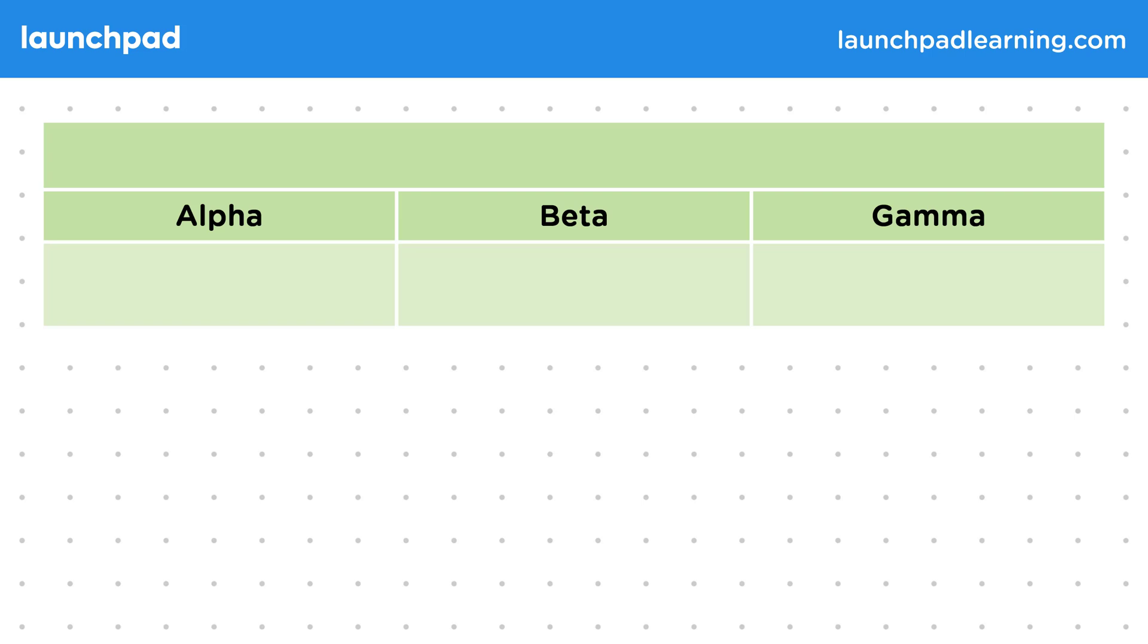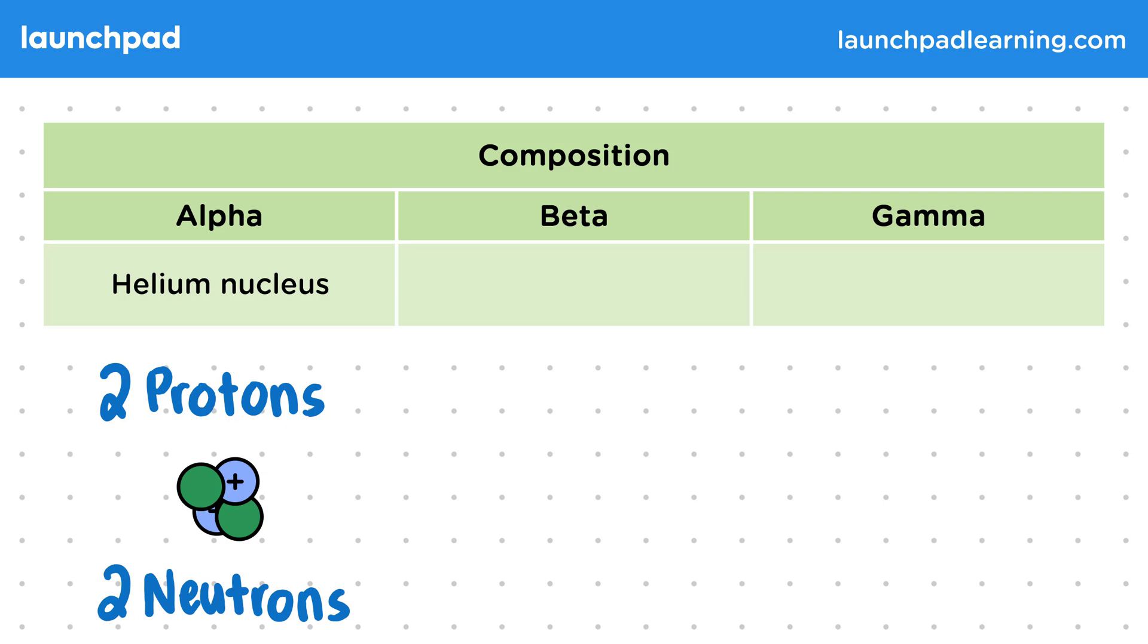Each radiation type takes a different form, so let's compare their composition. Alpha radiation is the same as a helium nucleus and consists of two protons and two neutrons. An alpha particle is emitted to reduce the overall size of a nucleus.